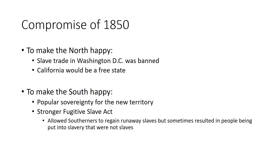The Fugitive Slave Act allowed Southerners to reclaim runaway slaves, but sometimes this resulted in people being put into slavery who were never slaves to begin with. Under this act, a slave catcher could take any African American off the street and bring them to the South, even though they were never enslaved. This gave Southerners the power to go into the North to retrieve any runaways.